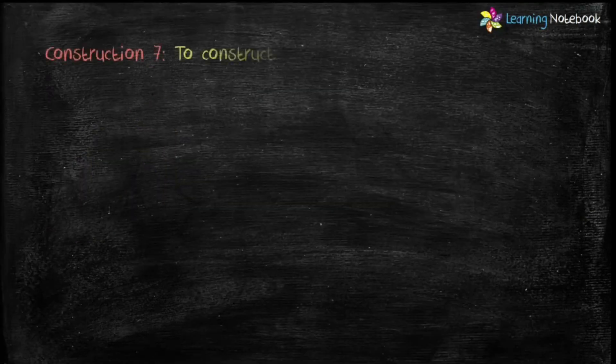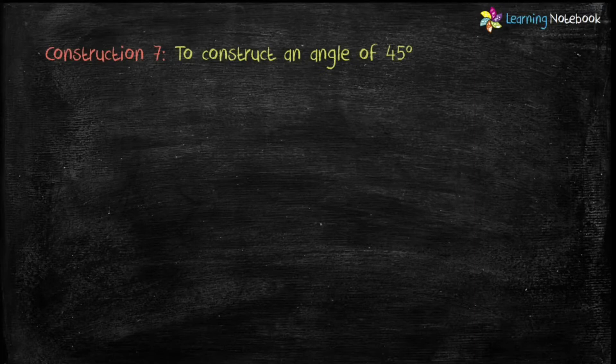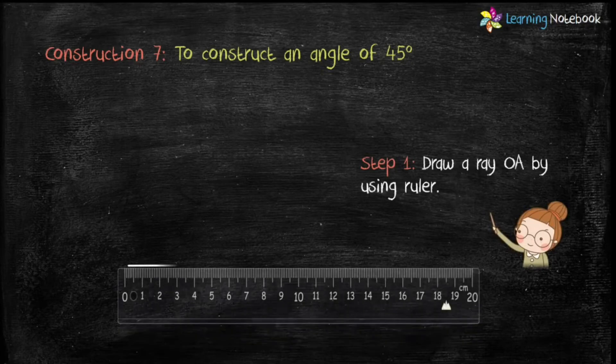So, let's start the construction. Students, to construct an angle of 45 degree, first construct an angle of 90 degree. Step 1 is, draw ray OA by using a ruler.